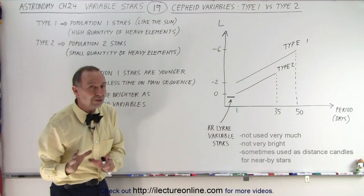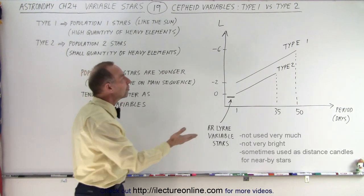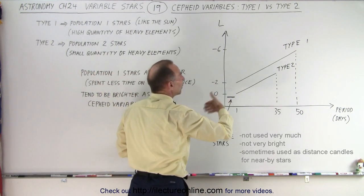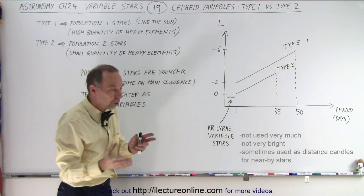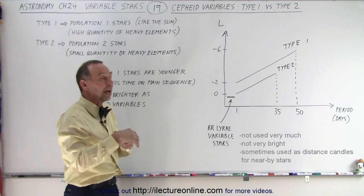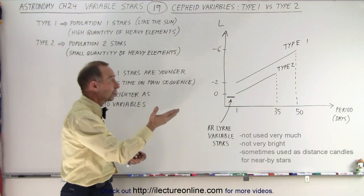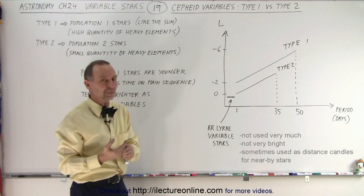And so when we look for the Type 1 Cepheid variables those are more useful to us because they are brighter and we can see them at larger distances. So it makes it easier to measure the apparent brightness of the Cepheid variables when they're Type 1's versus the Type 2's.